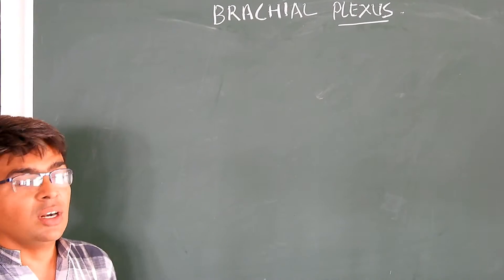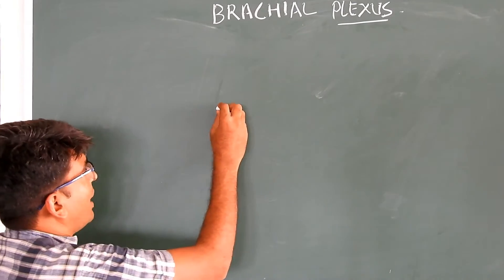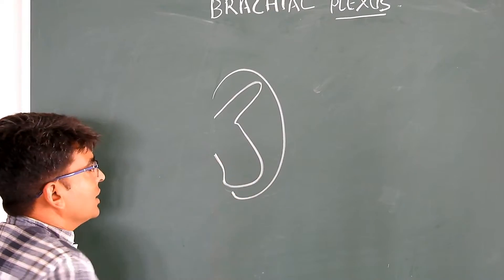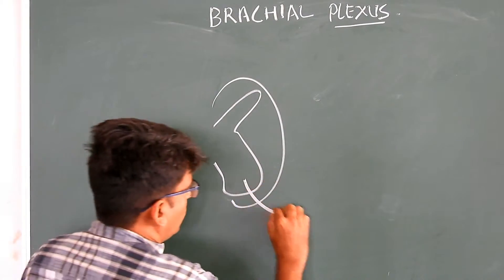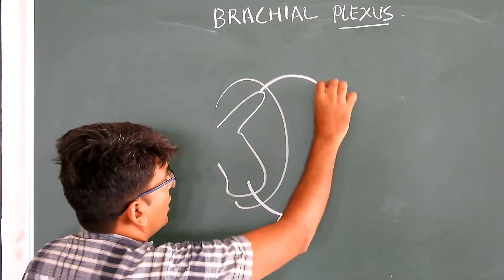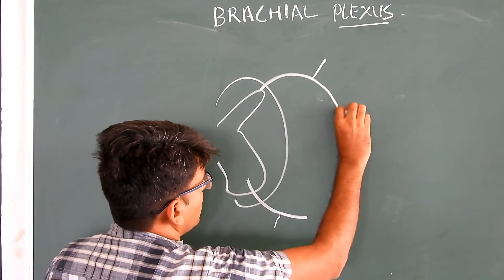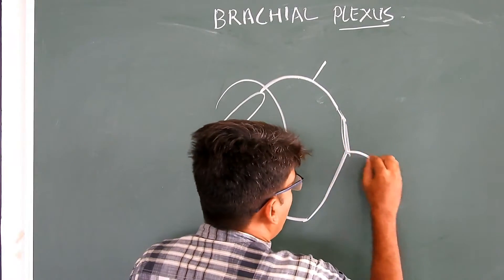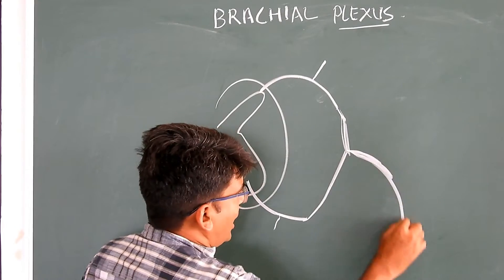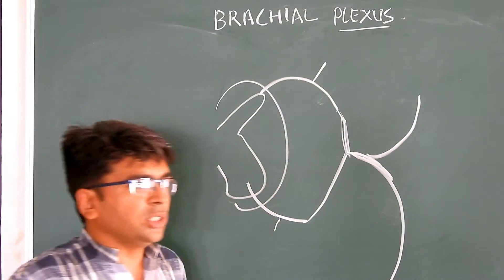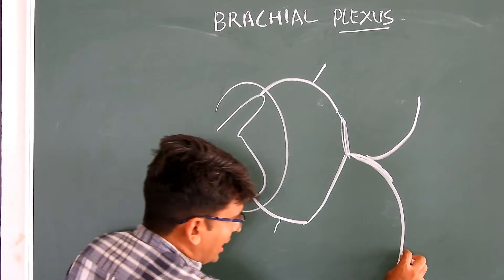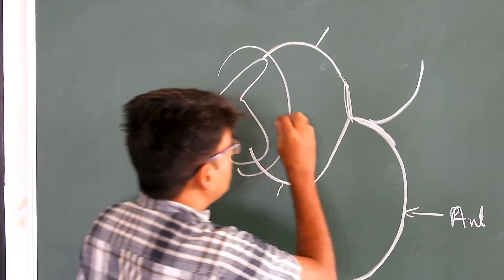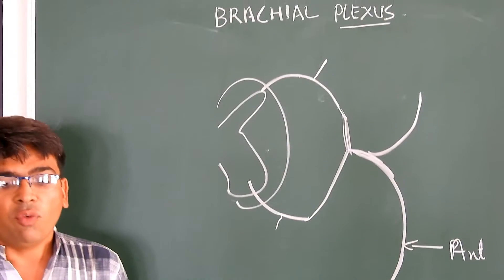Before that, we would like to learn something about the spinal nerve. The spinal nerve arises from the spinal cord and has two roots: anteriorly a motor root, and posteriorly a sensory root. These two combine to form the spinal nerve. The spinal nerve is then divided into an anterior division and a posterior division. The anterior division forms the plexus.